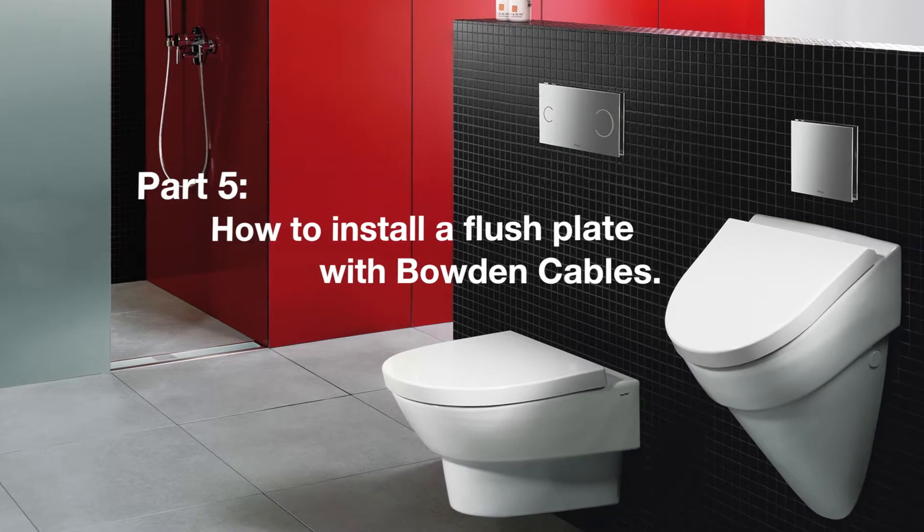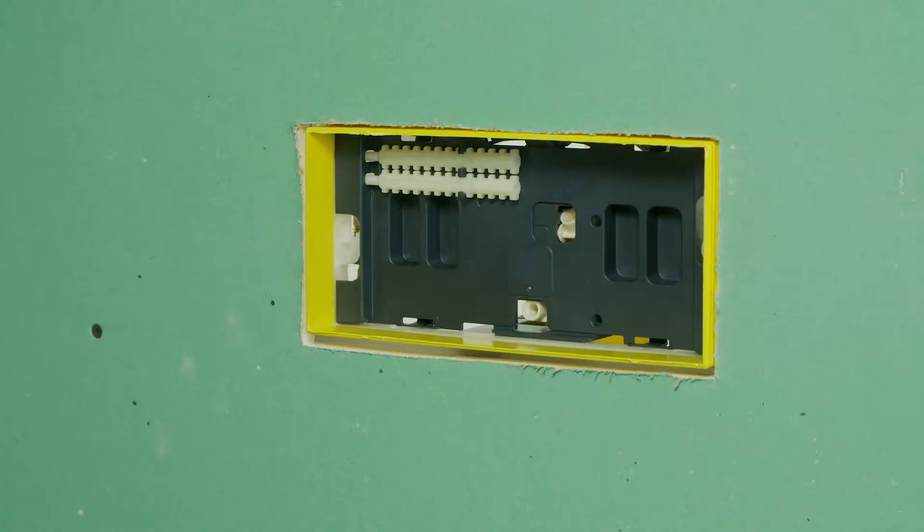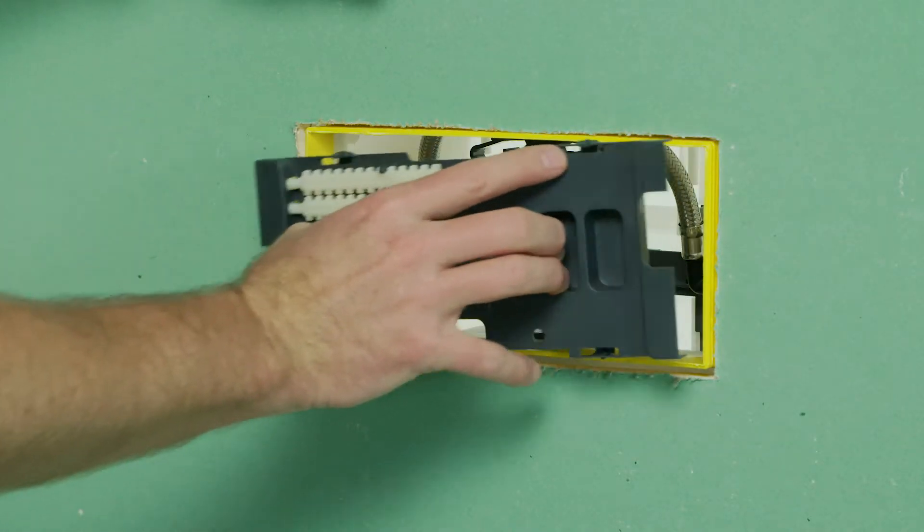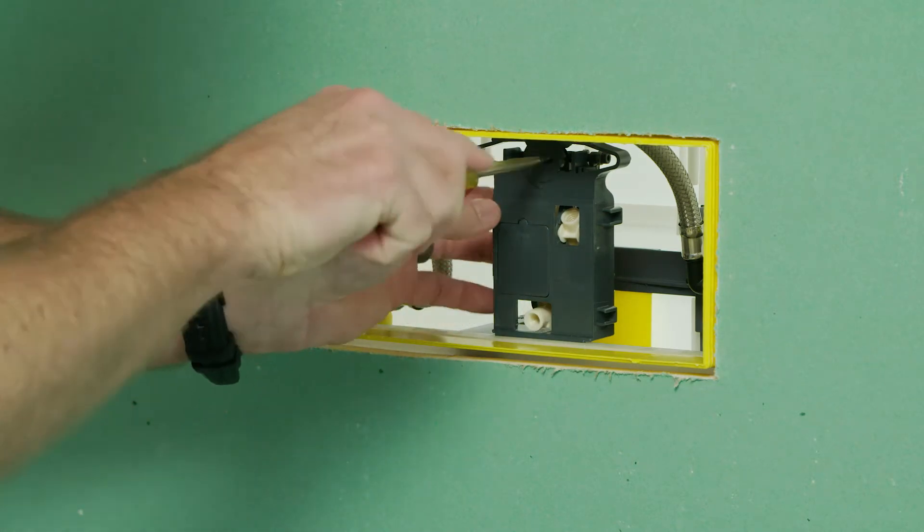How to install a flush plate with Bowden cables. A quarter turn unlocks the actuating mechanism.